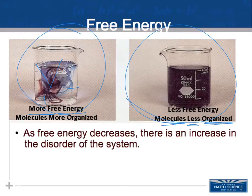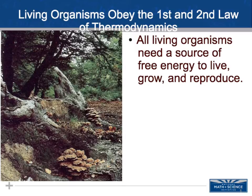That gradient — the difference in concentration on one side versus the other — allows work to be done. All living organisms need a source of free energy to live, grow, and reproduce, even though they obey the first and second laws of thermodynamics. They do not create energy; they can only do energy transformations.